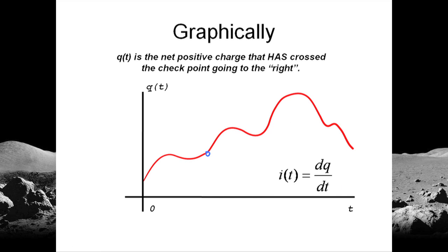Graphically, the derivative has a meaning. The current is dq/dt. But dq/dt was the slope of a line. What line? A tangent to the curve at that point in time. So at this point in time, the slope of that tangent tells us what is the current flowing through the checkpoint. We wait a few seconds, like here, and the slope has increased.